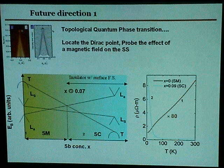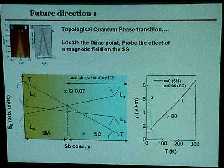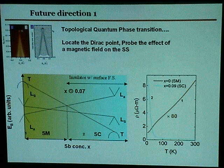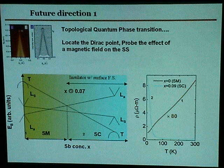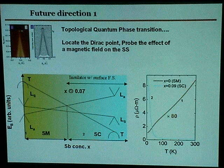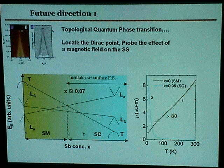Because then the surface and bulk contributions would be different. But my impression was that there is a Fermi surface — wouldn't it dominate over any contribution from the Dirac point? Yes, there is contribution from there, but we know the carrier sign on the surface state.